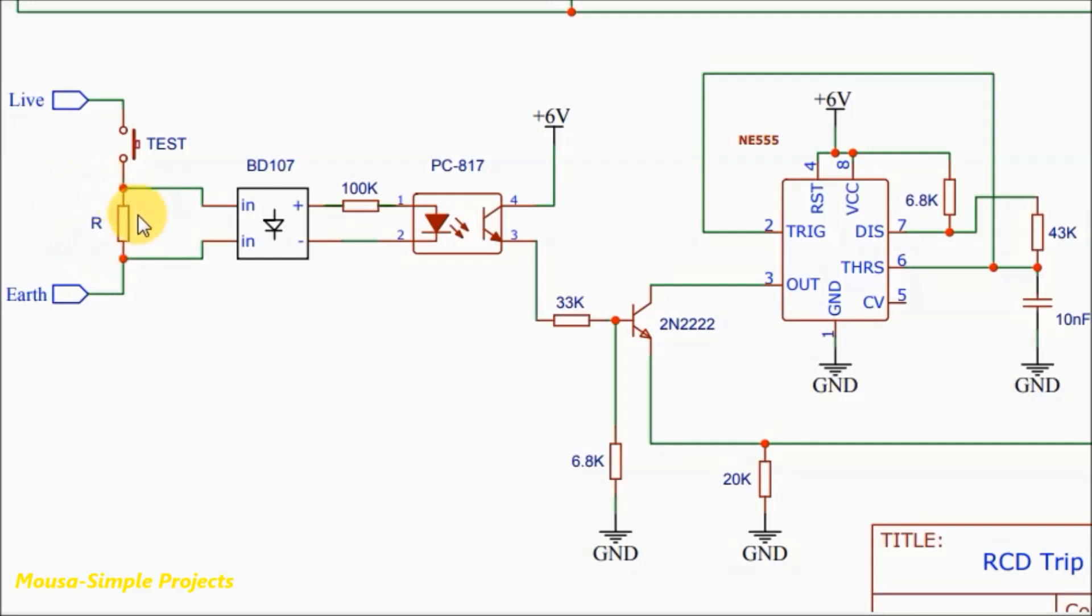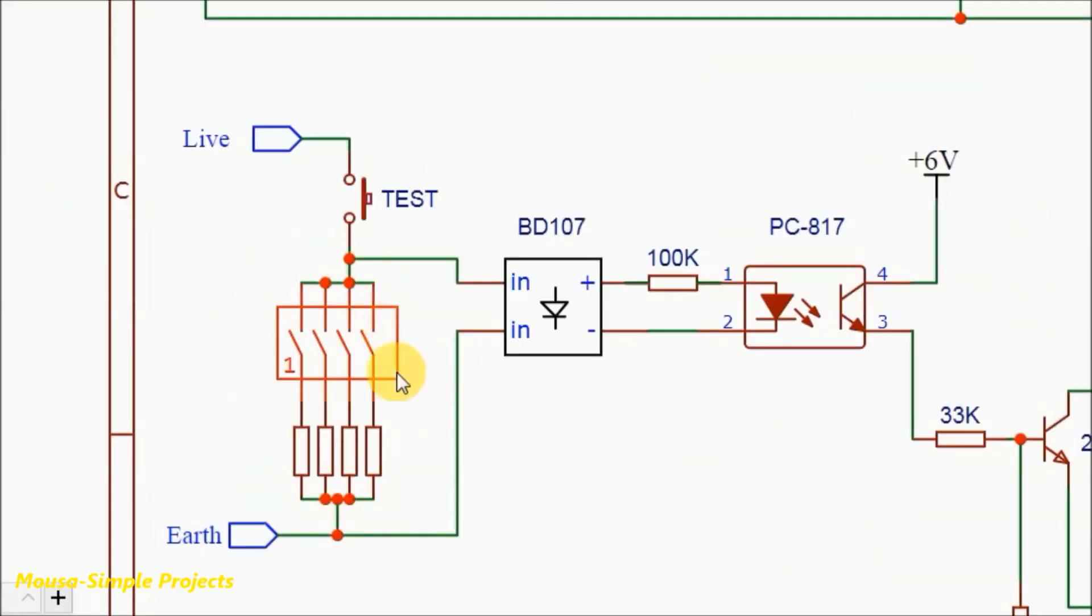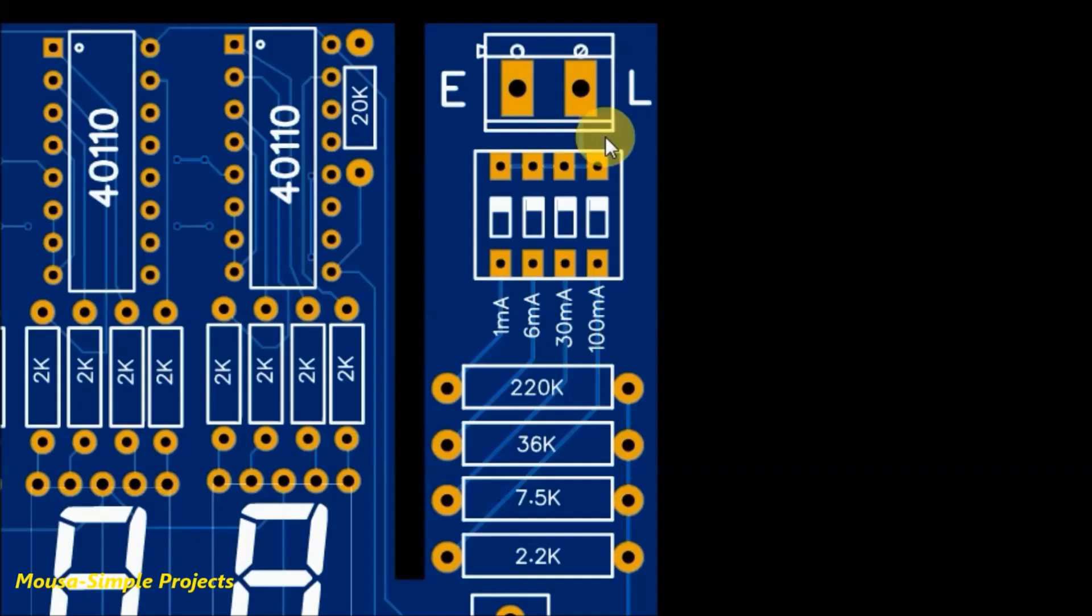Instead of using a single resistor, I used four of them with different values and I can switch between them by using a DIP switch to select the proper leakage current depending on your RCD type.